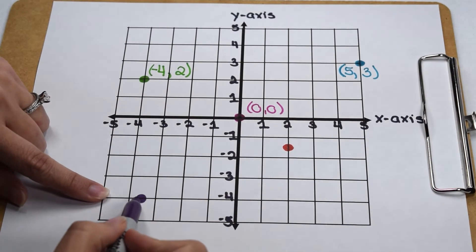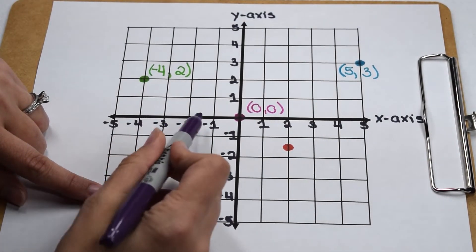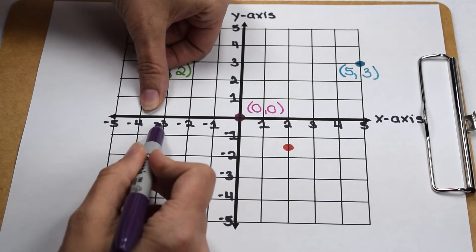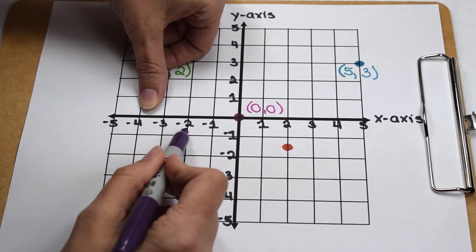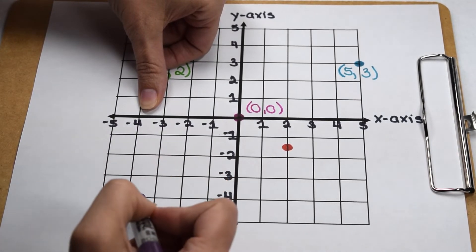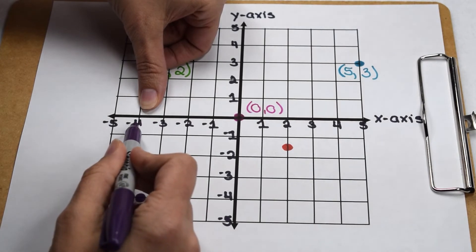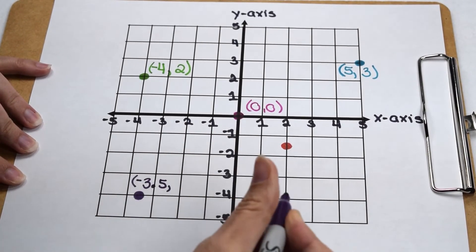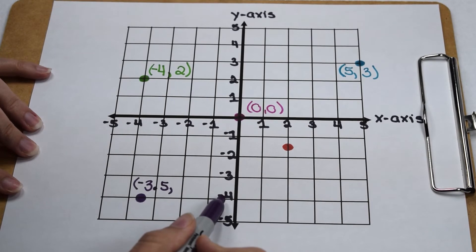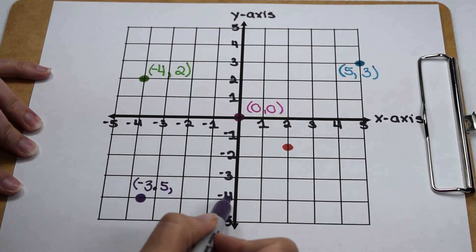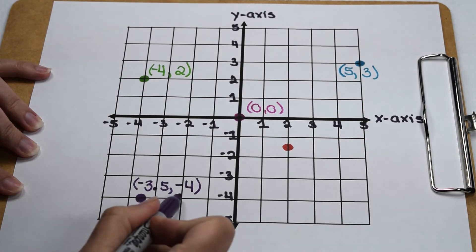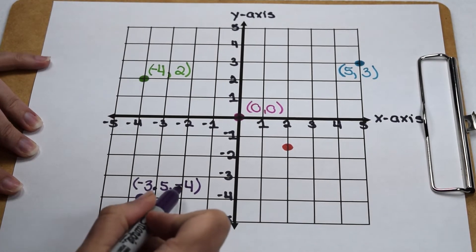Coming down to quadrant 3, we start by checking its x-value. We notice we're to the left of the origin, so our x-value is going to be negative. We also notice our point falls between negative 3 and negative 4. Since the scale on our x-axis is counting by ones, and our point falls about halfway between negative 3 and negative 4, we can estimate its x-value to be about negative 3.5. Coming across to check its y-value, we notice we're below the origin, so its y-value is going to be negative. This point lines up with negative 4 on the y-axis, so this point is best represented by the ordered pair (-3.5, -4).